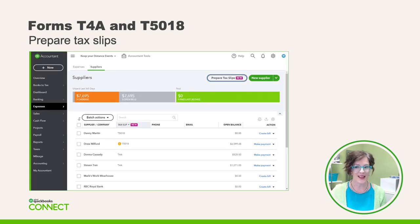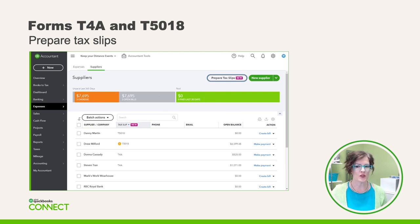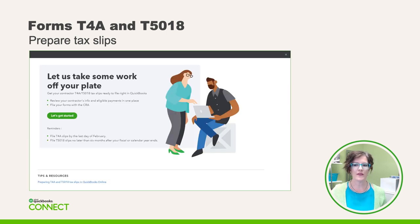Now comes the fun part — it's time to prepare the tax slips. Start by heading to the Supplier Centre and review the column that says Tax Slips. The easiest way to spot issues is to look for the orange warning symbol. Once you've dealt with all the warnings, click on Prepare Tax Slips — that button is located in the top right corner. If you haven't filed either of these slips in the past, here are the deadlines to be aware of.